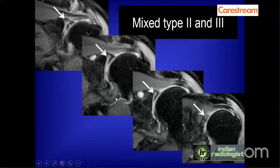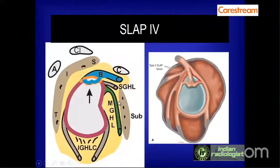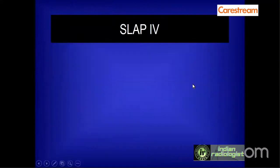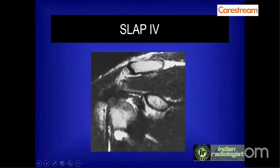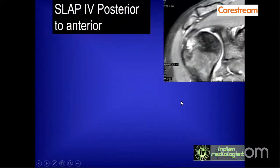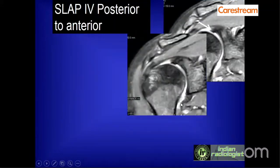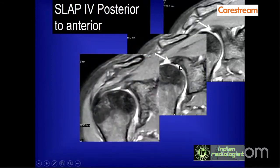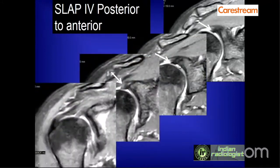There can be a mixed Type 2 and Type 3 SLAP lesion. SLAP 4 extends into the biceps tendon, and coronal images show the fraying of the labrum, hyperintensity in the labrum, extending into the biceps tendon in the last coronal image — involving the most proximal portion of the biceps tendon.